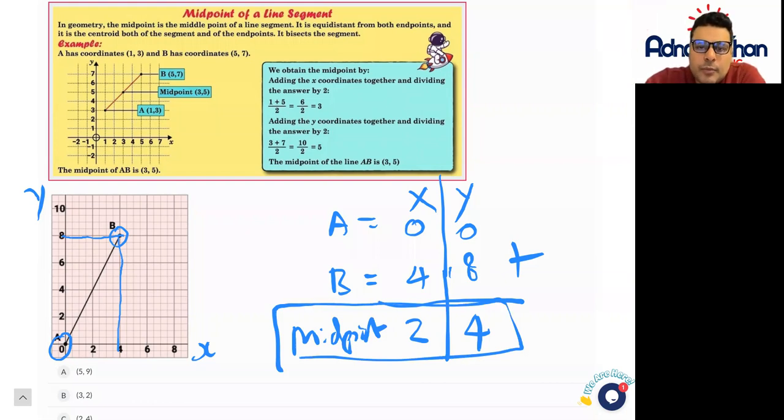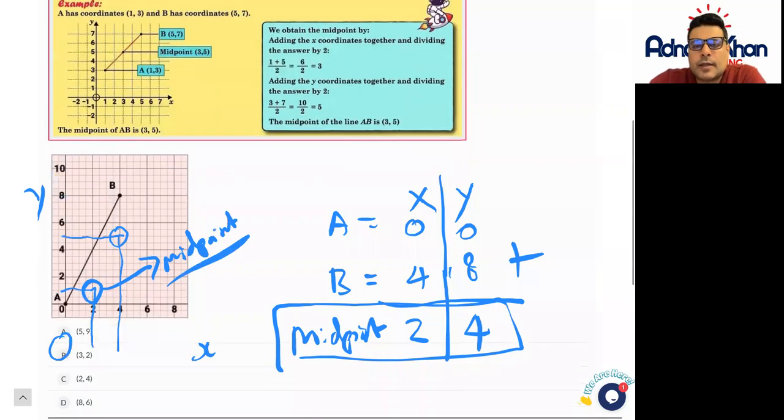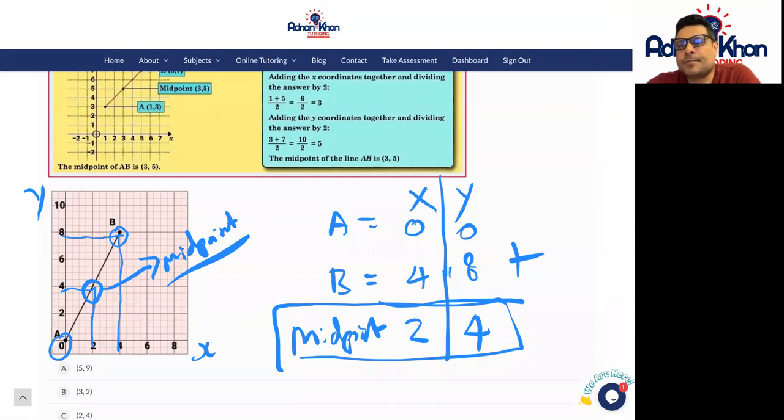Let's work out the midpoint: (2, 4). This is roughly our midpoint. Answer C in this case will be the right answer. If you want to watch this video again to get an idea of how to do these questions, please do. We'll review these in our next lesson, inshallah. Thank you so much.